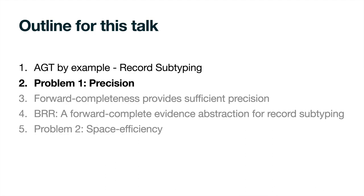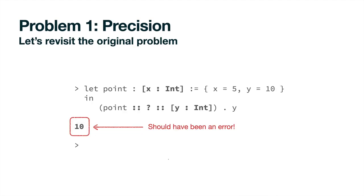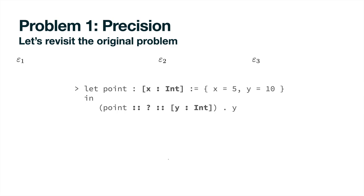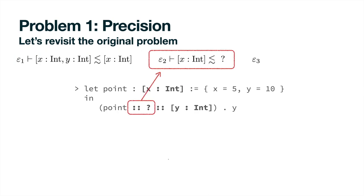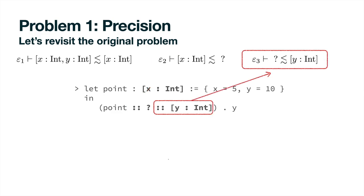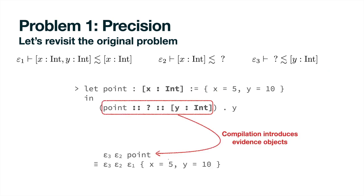Let's revisit an example we previously presented. We wanted this program to stop with an error, but mentioned that it instead runs to completion. This program involves three evidence objects, which must account for the three casts in the program. First, the let binding is hiding the Y field of the record value. Then, this ascription hides all type information. And finally, the outer ascription exposes a record with a Y field from a term with the unknown type. At runtime, we will keep track of these evidence objects in the program instead of casts.